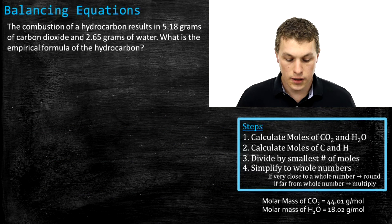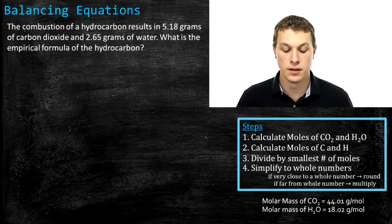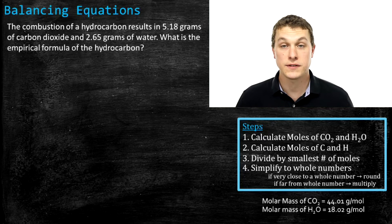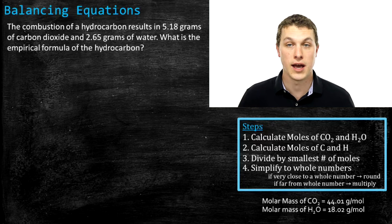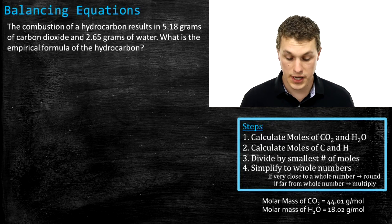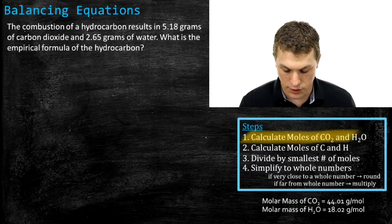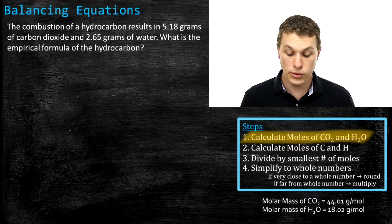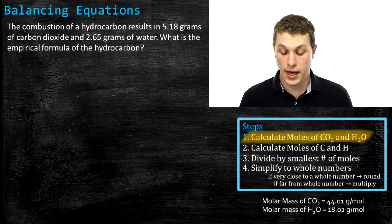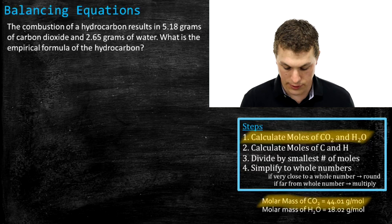The combustion of a hydrocarbon results in 5.18 grams of carbon dioxide and 2.65 grams of water. We want to know: what is the empirical formula of that hydrocarbon? I've broken this process into four steps. Step one says calculate the moles of CO2 and water.